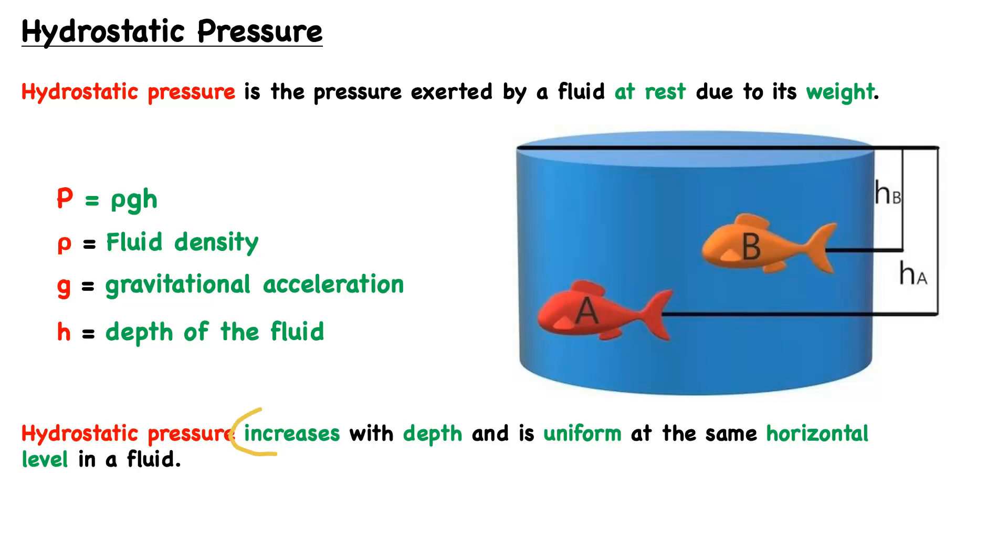Hydrostatic pressure increases with depth and is uniform at the same horizontal level in a fluid. We've already discussed how it increases with depth, but let's talk about how it's uniform at the same horizontal level. If we had another fish, we could call it fish C. This is at the same horizontal as fish A, so they're at the same depth. Everything along this horizontal will experience the same hydrostatic pressure because it has the same amount, the same weight of liquid above it.